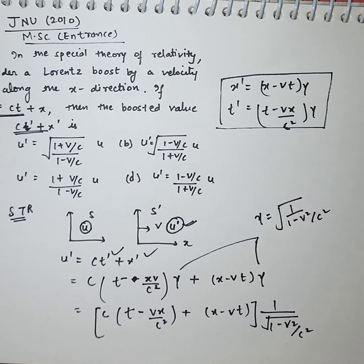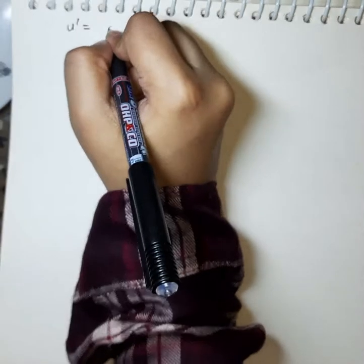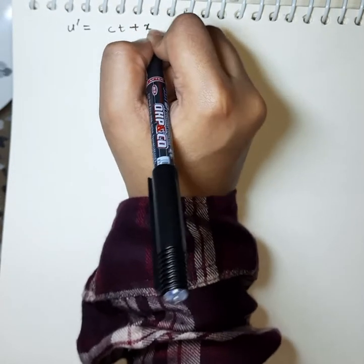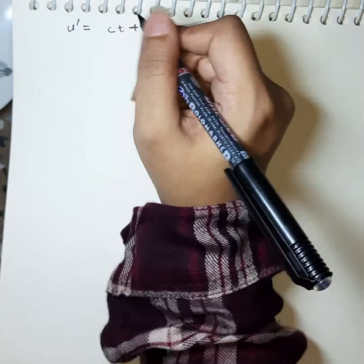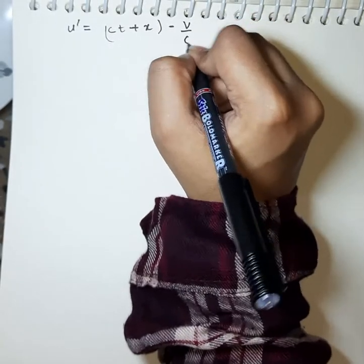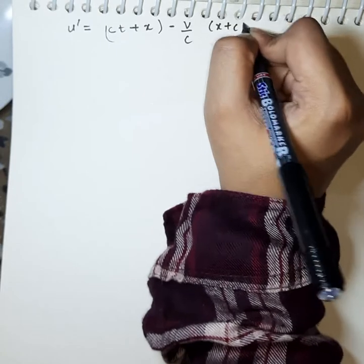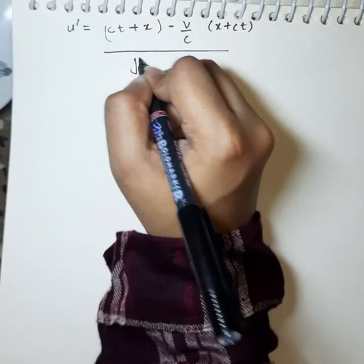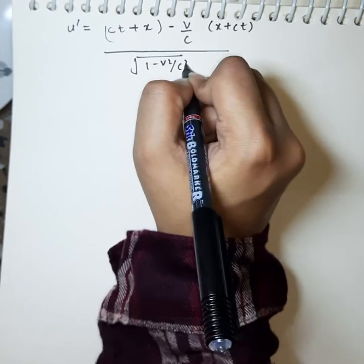Taking this out and multiplying, this will become ct plus x minus v by c times x plus ct. The terms will be modified and calculated upon the Lorentz factor, 1 minus v square by c square.